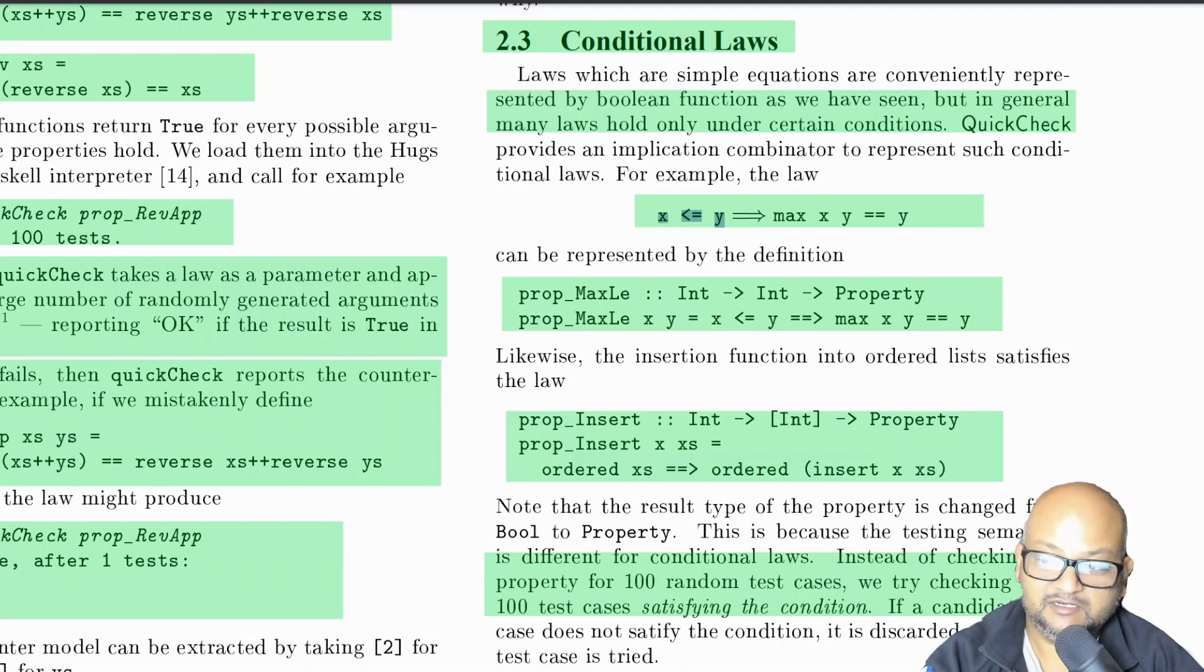That was a really simple case, but often we will need to test properties that only hold under certain preconditions. For example, for a function that computes the maximum of two values, we want to be able to express that the max of x and y is y only under the condition that x is less than or equal to y. Another example is inserting an element into an ordered list. We want to say that our input list is ordered and only then will our output be ordered as well.